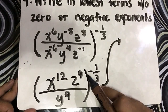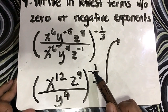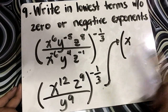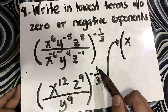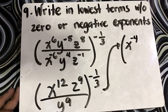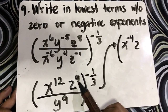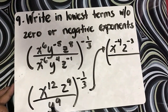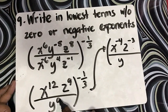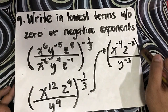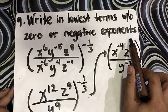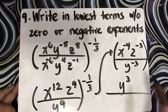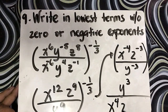Since this is raised to negative 1 third, multiply each exponent: x has 12 times 1 divided by 3 equals 4, but negative gives x raised to negative 4; z has 9 divided by 3 equals 3 giving z raised to negative 3; y has 9 divided by 3 equals 3, giving y raised to negative 3. Without negative exponents, the final answer is y raised to 3, all over x raised to 4, z raised to 3.